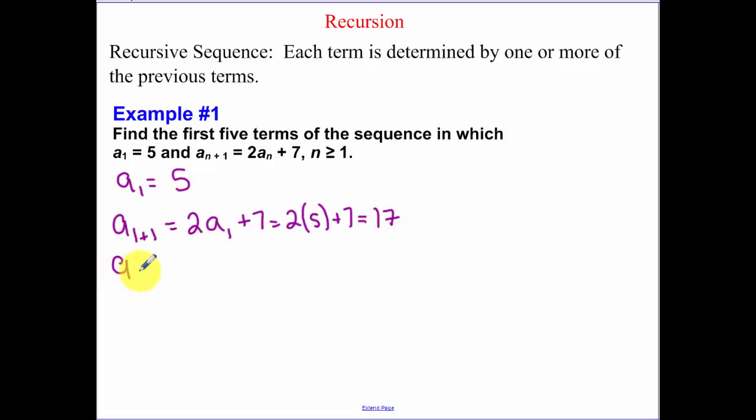To get to the next term, we have 2 plus 1, because that would get us our third term. So again, that's telling me my n. So it's telling me I'm taking the term previous, which is the second term, plus 7. So we have 2 times 17 plus 7. And that's going to get me 41. And this is our third term.